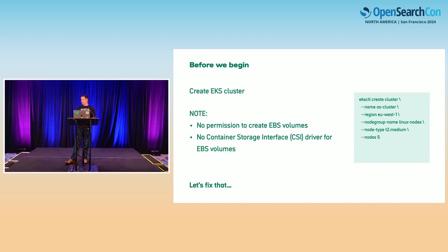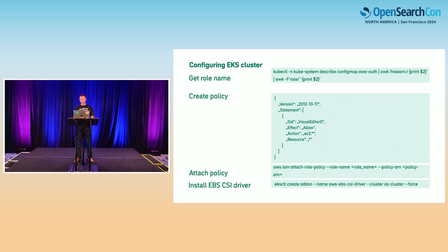Before we begin, we need an EKS cluster. To get one running, it's only a few lines of code. In this case, I'm creating a five-node cluster using the EKS control tool. If you do this yourself at home, you won't be able to create EBS volumes because there's no CSI driver for them. We fix that by getting the role name, creating a policy that gives full access to EC2, attaching the policy to the role, and installing the EBS driver using the command at the very bottom. That's just boilerplate to make sure everything else can get up and running.